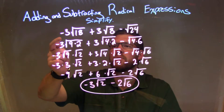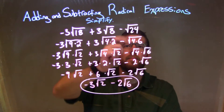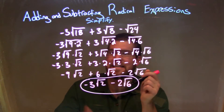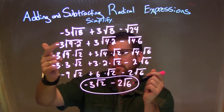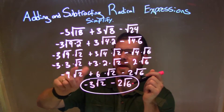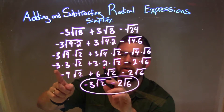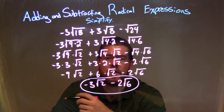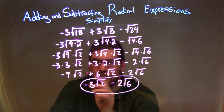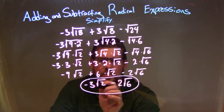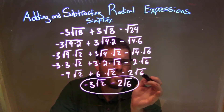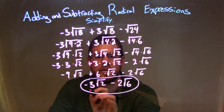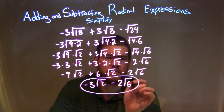Let's recap. We were given negative 3 times the square root of 18, plus 3 times the square root of 8, minus the square root of 24. I broke down each square root into simplest form, then separated and multiplied to get negative 9 times the square root of 2, plus 6 times the square root of 2, minus 2 times the square root of 6. From there, we combined the square root of 2 terms: negative 9 plus 6 equals negative 3. The square root of 6 term can't combine anywhere, so it just comes down. Final answer: negative 3 times the square root of 2 minus 2 times the square root of 6.